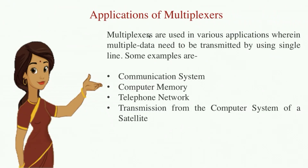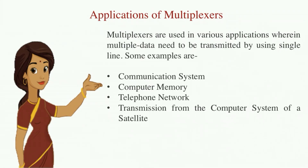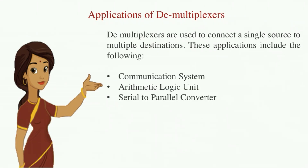Multiplexers are used in various applications where a single line is used for transmitting multiple data. They are used in communication systems where audio and video from different channels are sent through single lines, in computer memory to reduce the number of copper lines required, in telephone networks to integrate multiple audio signals on a single transmission line, and in satellite communication systems. Similarly, demultiplexers are used where a single source transmits to multiple destinations, such as in communication systems, arithmetic logic units, and serial-to-parallel converters.